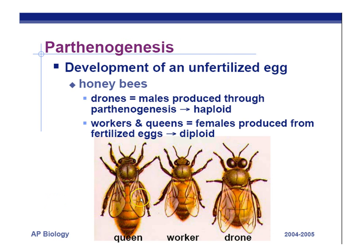Normally, a queen bee is fertilized by a male, and that fertilized egg develops into a worker. However, if the queen doesn't get fertilized, with honeybees the haploid eggs — one set of chromosomes — are able to develop into a fully functioning organism called a drone, which does basic hive maintenance in the colony.